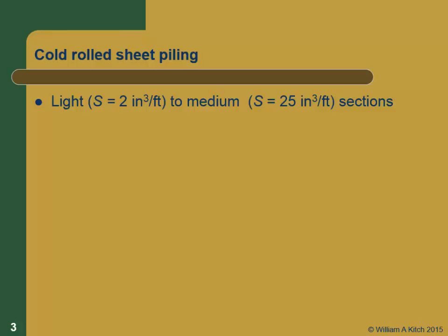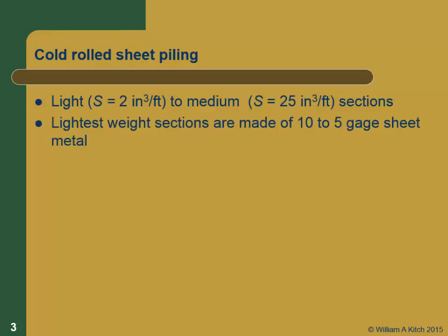Cold form steel is usually much lighter. When you see light gauge steel construction, that's all cold form steel. W sections and H sections are all hot rolled sections. The section moduli are fairly small. The lightest weights you can get are made out of 10 to 15 gauge steel, and those are used for really low, small projects — not for real earth retention. That's the kind of gauge you might see in metal bend walls.